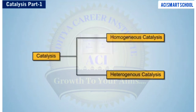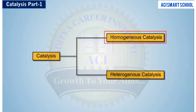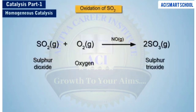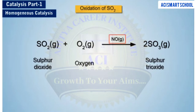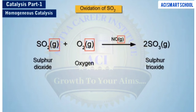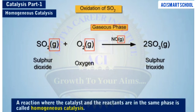Catalysis can be broadly divided into two types: homogeneous catalysis and heterogeneous catalysis. Let us first learn about homogeneous catalysis. Consider the oxidation of sulphur dioxide to sulphur trioxide in the presence of nitric oxide as the catalyst. As can be seen, the catalyst nitric oxide and the reactants sulphur dioxide and oxygen are all in the gaseous phase. A reaction where the catalyst and the reactants are in the same phase is called homogeneous catalysis. Homogeneous catalysts function in the same phase as that of the reactants.